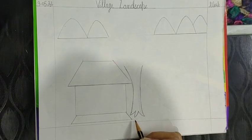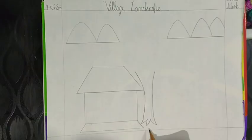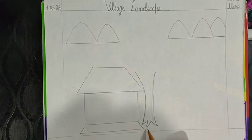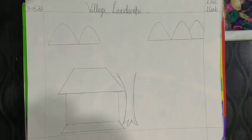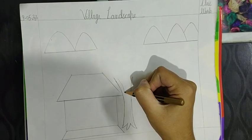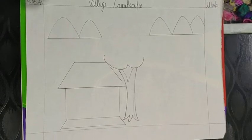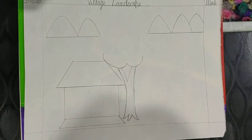After making two parallel curved lines, we will make three triangles like this. Now we will make a V between two curved lines. Like this. Now for the leaves portion, you have to make curves like this.